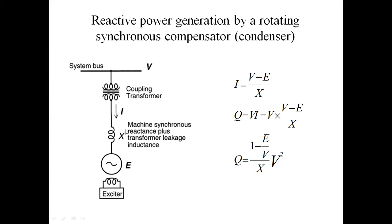The synchronous machine reactance is here, representing the synchronous machine. This is the synchronous machine stator and this is the synchronous machine rotor. The field is excited separately by a DC supply. E is the synchronous machine generating voltage; V is the transmission line voltage. The current I in the compensator circuit is given by the formula: I = (V − E) / X, where V is the system transmission line voltage, E is the synchronous compensator generating voltage, and X is the reactance — machine synchronous reactance plus transformer leakage reactance.